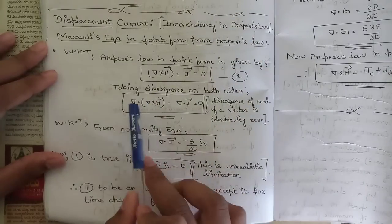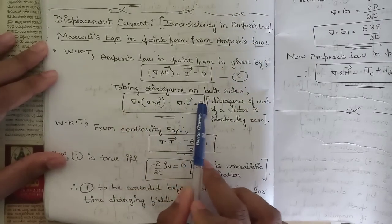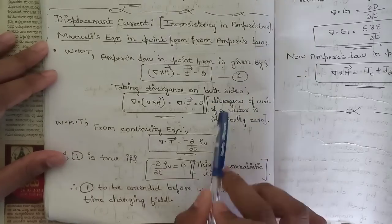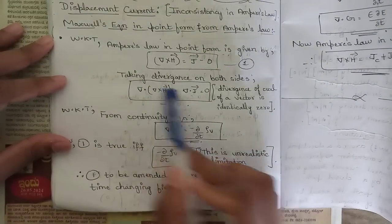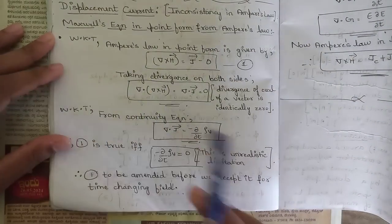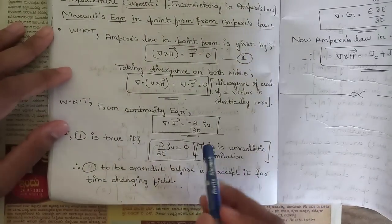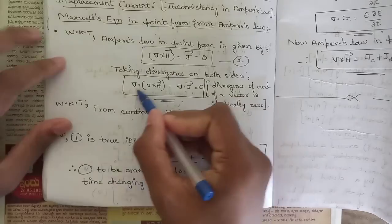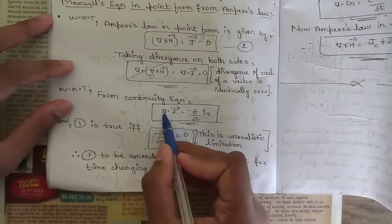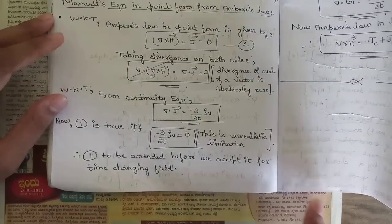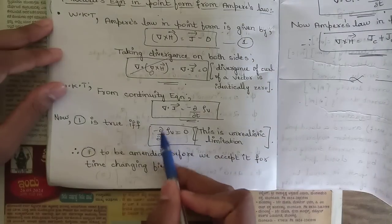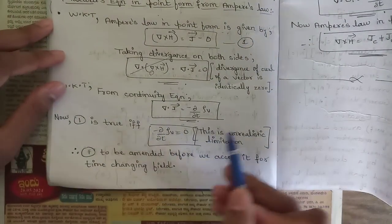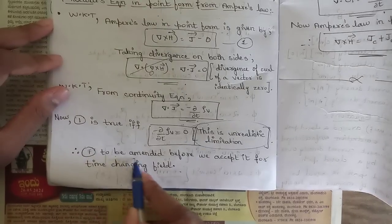Taking divergence on both sides: ∇·(∇×H) = ∇·J = 0. Since divergence of curl of a vector is identically zero, ∇·J = 0. But from the continuity equation: ∇·J = -∂ρv/∂t. Equation 1 is only valid if ∂ρv/∂t = 0, which is an unrealistic limitation for time-changing fields. Therefore equation 1 must be amended.